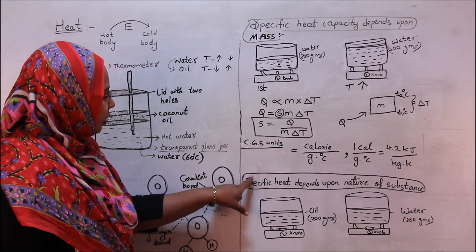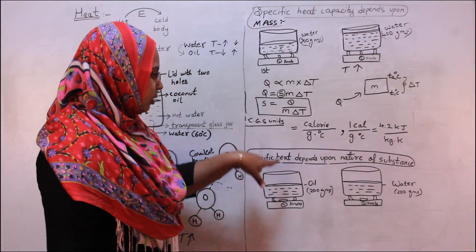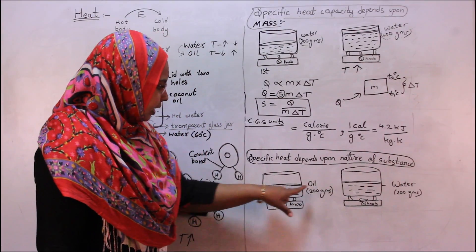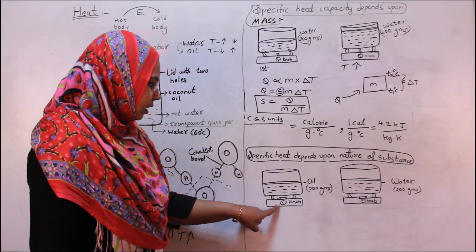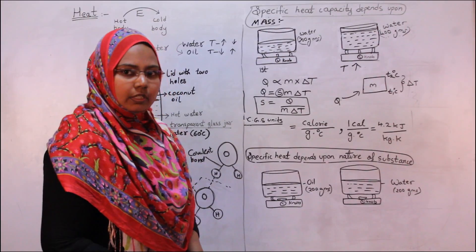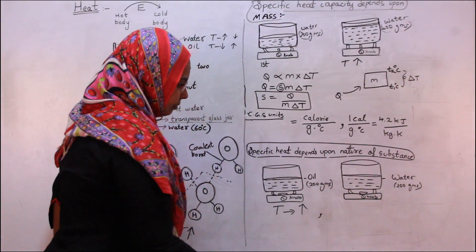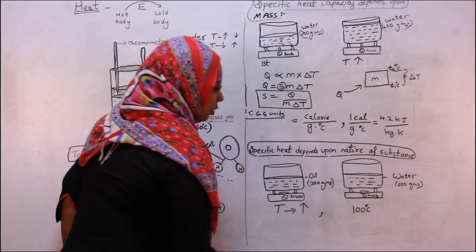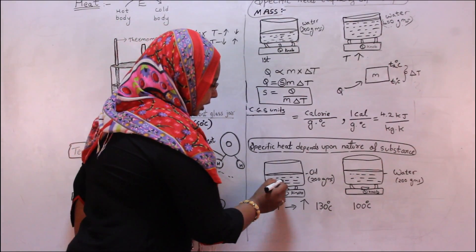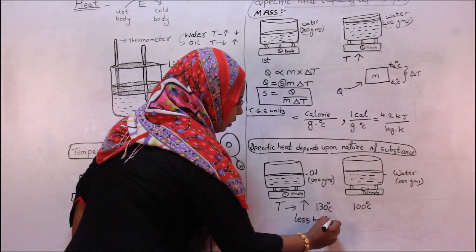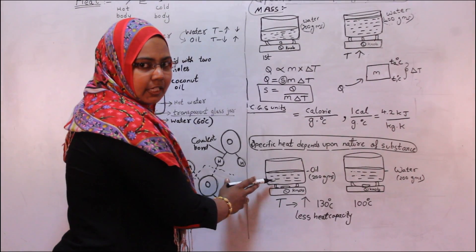Specific heat capacity not only depends upon mass but also upon the nature of the substance. Take two identical pans — one containing 200 grams of oil and the other containing 200 grams of water. Turn on the knob and place a thermometer in each pan. You will notice that the temperature of oil increases rapidly compared to water. When water starts boiling at 100 degree Celsius, the oil temperature has already reached 130 degree Celsius. This means oil needs less heat than water, so oil has a lower specific heat capacity than water.